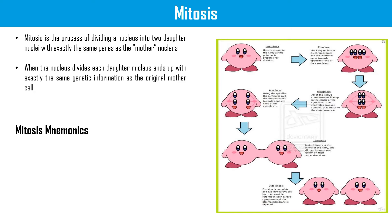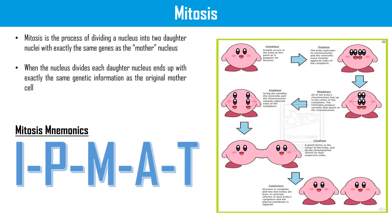We are going to look at each phase in detail. In order to remember the name and sequence of these phases, the best mnemonic you can use is IPMAT: I for interphase, P for prophase, M for metaphase, A for anaphase, T for telophase, and then we have cytokinesis.